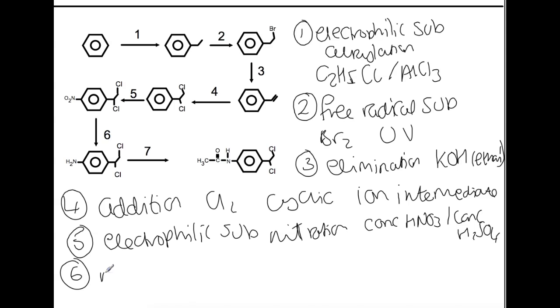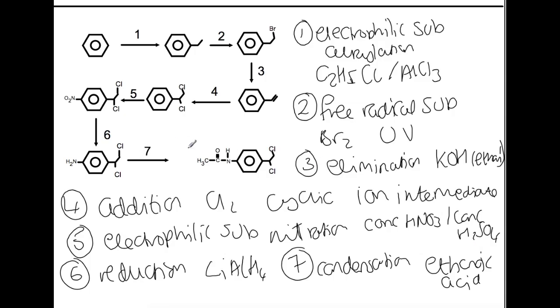Step six is a reduction. And the reducing agent that you'll know of is lithium aluminium hydride. And then finally step seven is a condensation reaction. And for that you'll need ethanoic acid. Initially this reaction will produce a salt, an ammonium salt of the ethanoic acid. But to produce the amide link you then just heat that up to drive off water.